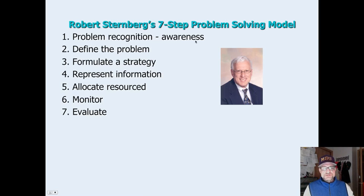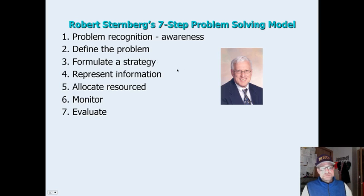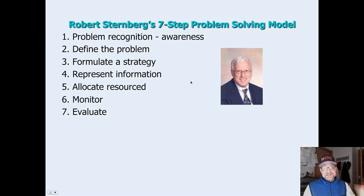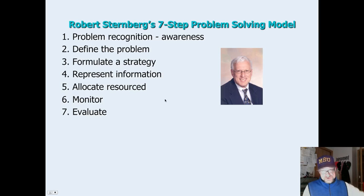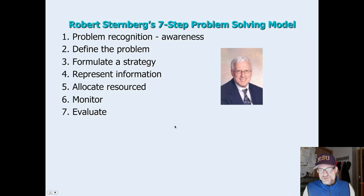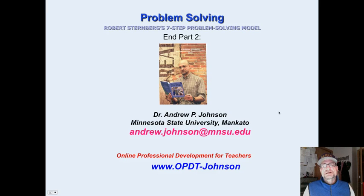So the seven steps are: awareness, defining or redefining the problem, formulating a strategy up front with some planning, representing the information on paper so you can see how things relate to each other, allocating resources, monitoring as you go through the process of solving the problem, and then evaluating at the end. There is a picture of Robert Sternberg. End part two.